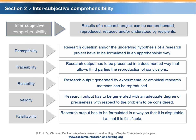Falsifiability means that the research output has to be formulated in a way so that it is disputable, meaning that it is falsifiable. An example: a professor for marketing prepares a research paper that ends with the conclusion 'Perfect marketing strategies exist.' This conclusion is not falsifiable due to the imprecise adjective 'perfect.' Another example: a professor for human resource management claims that 'Leadership training will have an impact on the management of companies.' Again, this statement is not falsifiable because it lacks precision.